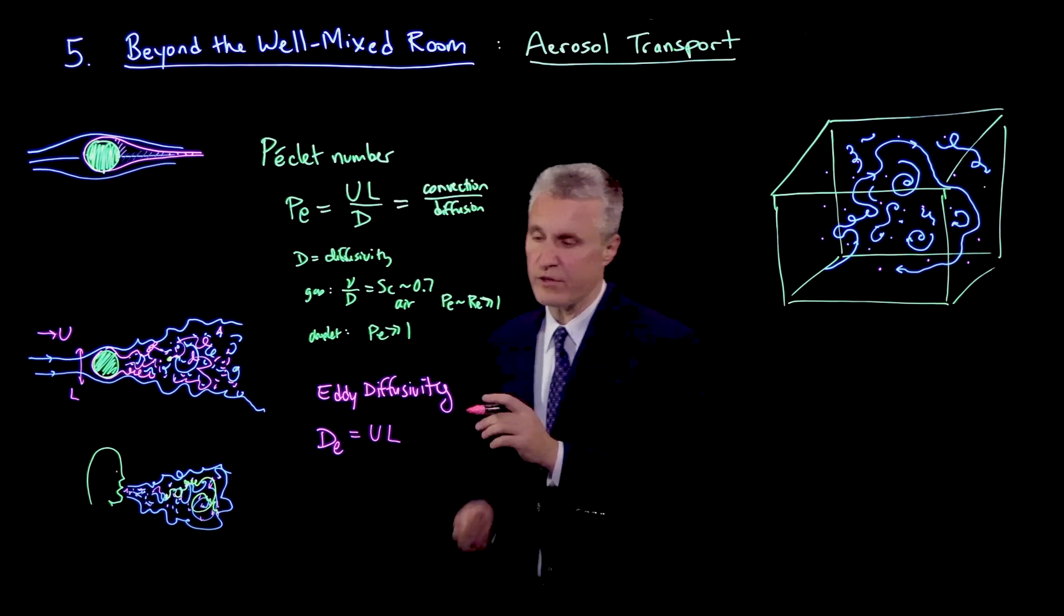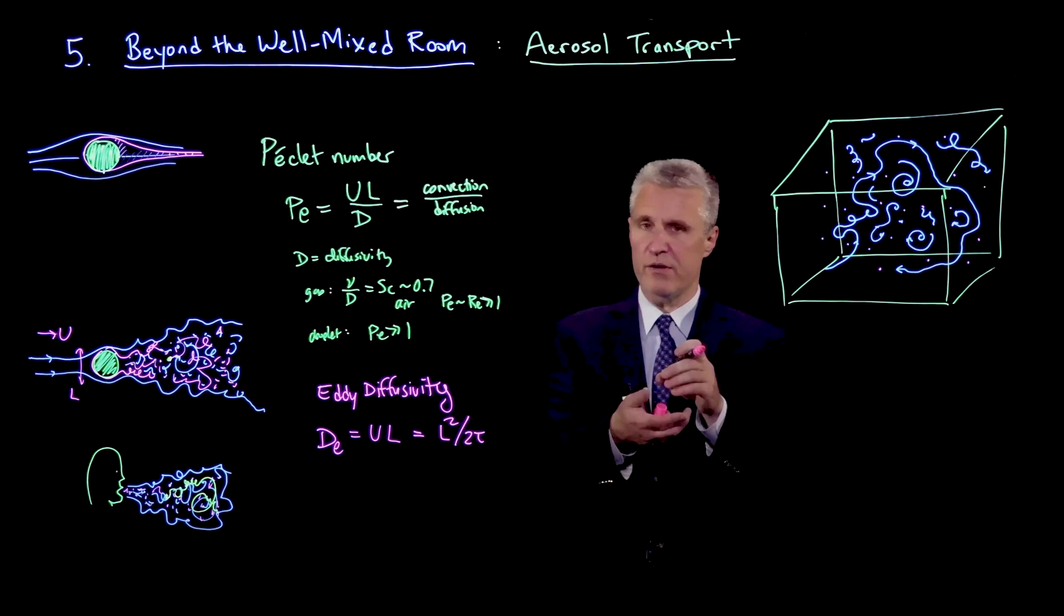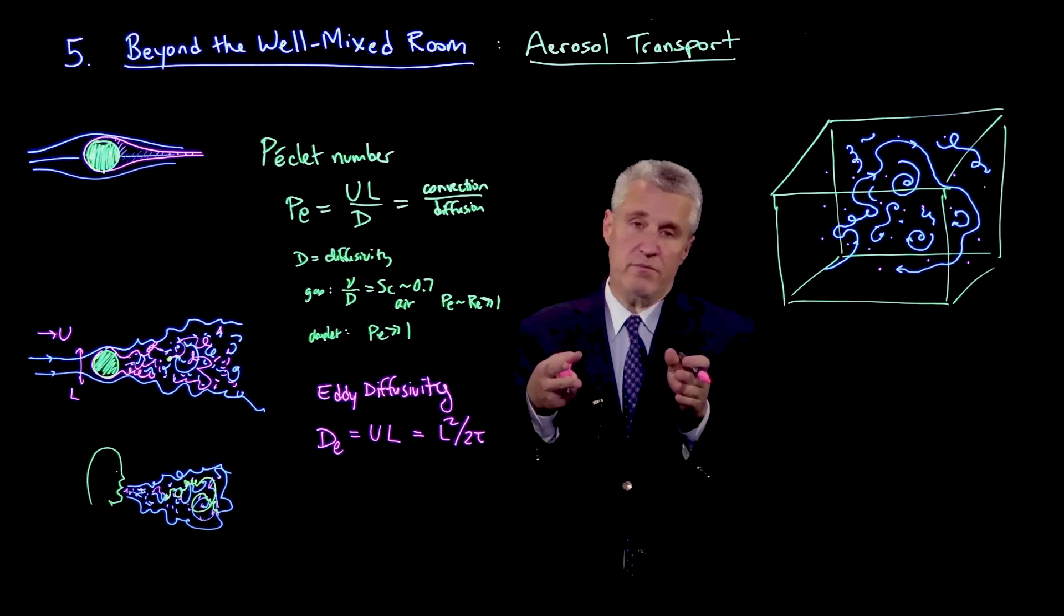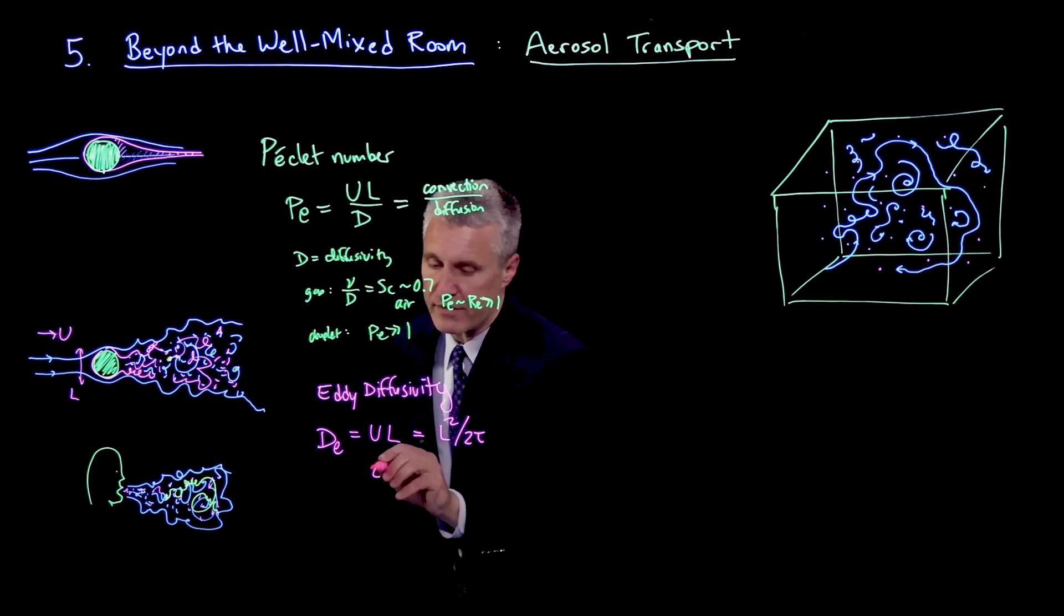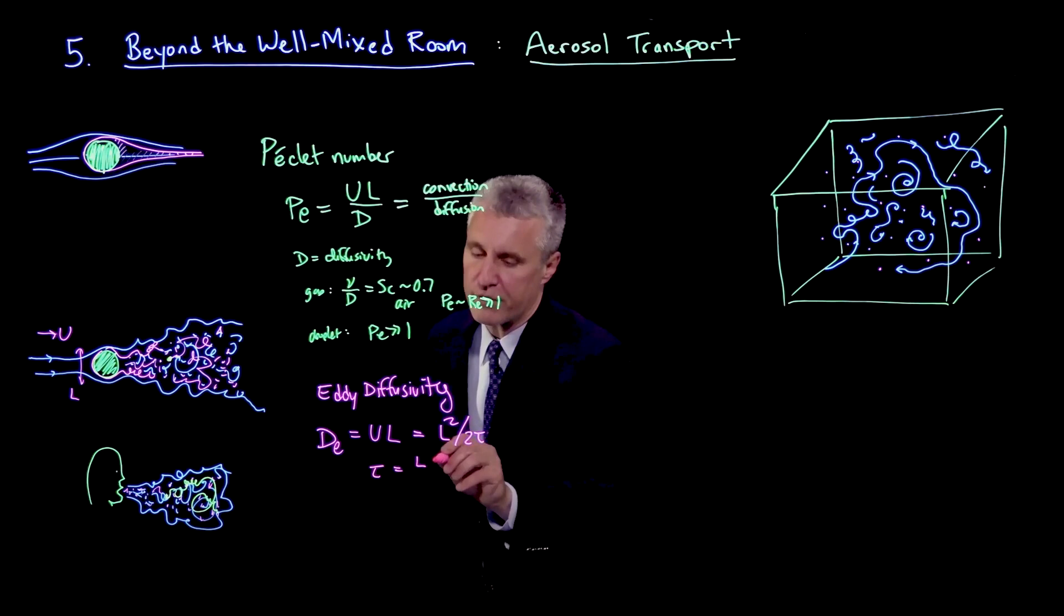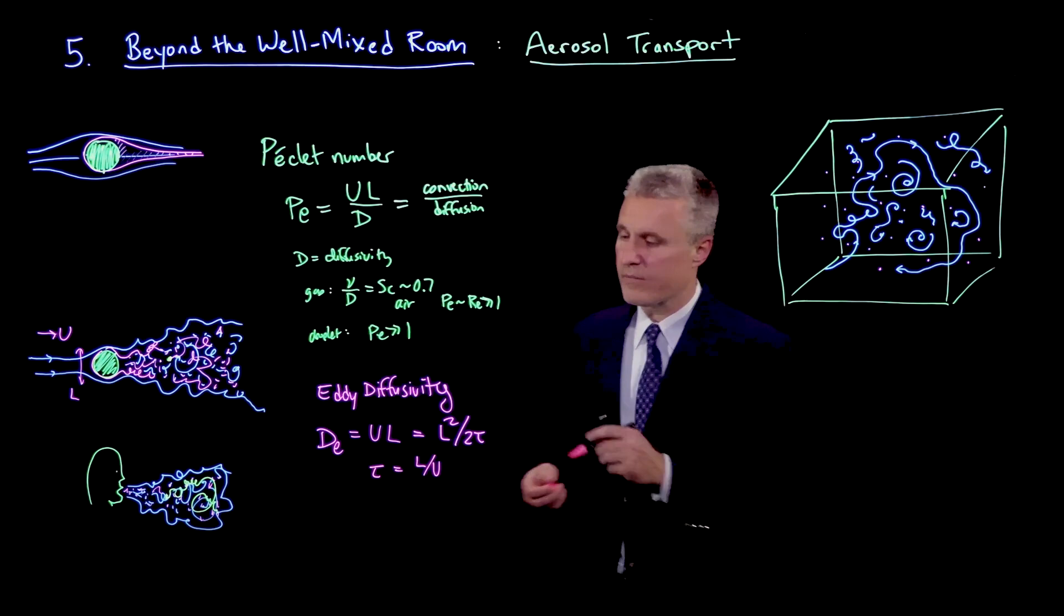Another way to write this would be that it's L squared over 2 times a time scale. Because we often write diffusion, if there's a time step tau and a length scale L for a given step, then L squared over 2 tau is the diffusivity. That's how we think about molecular diffusivity as well. But the question is, what is this time scale? We can see here that the time scale is L over U. So it's a convective time scale. It's the time to essentially go around one of those eddies. And I'm writing these really just as scaling arguments here.